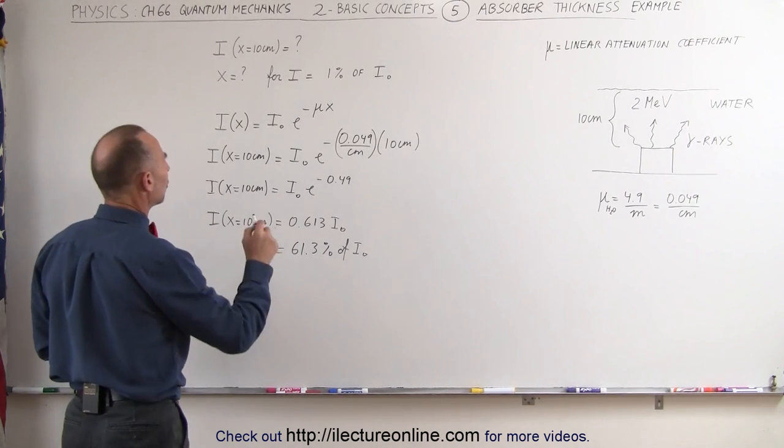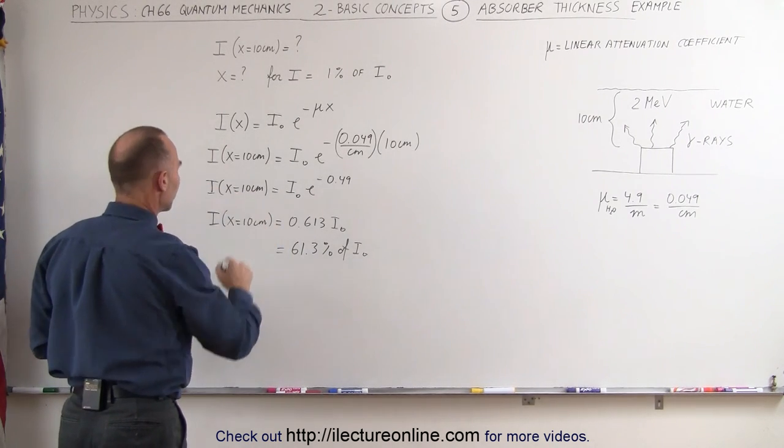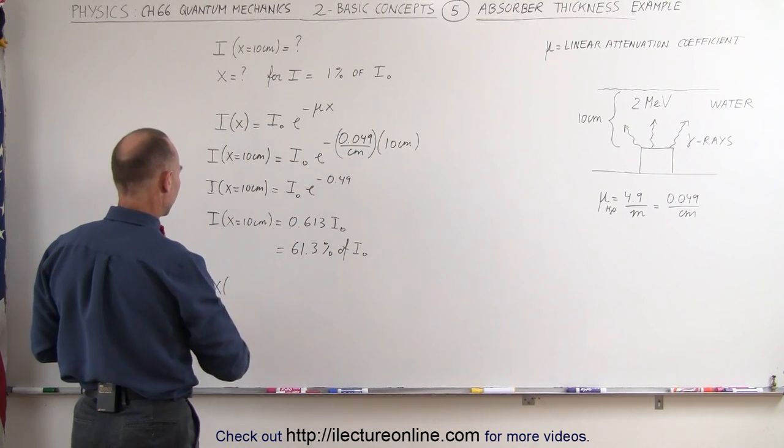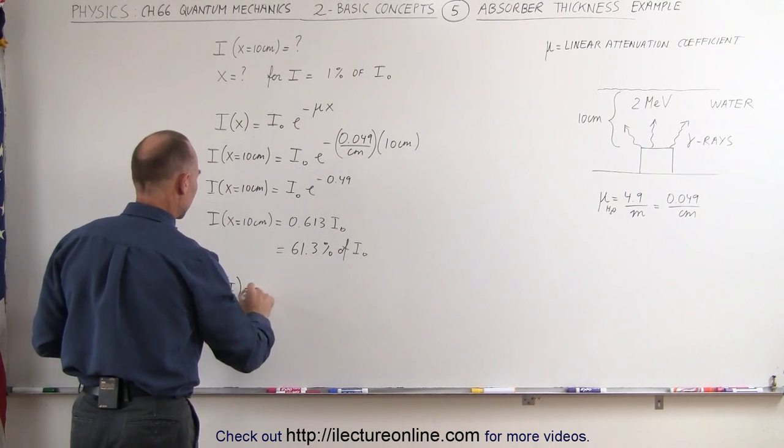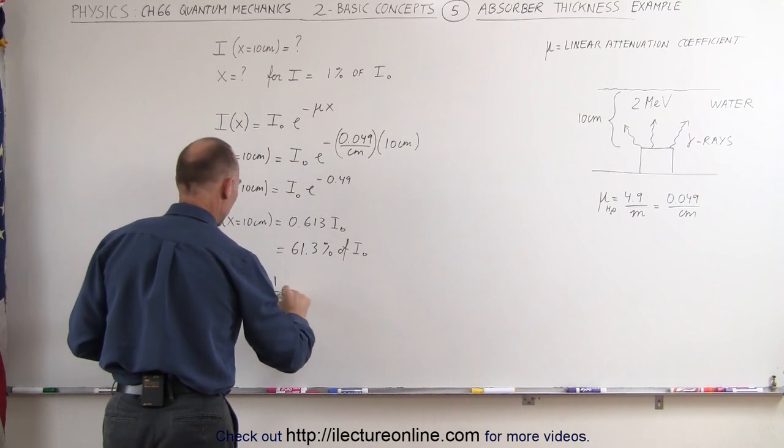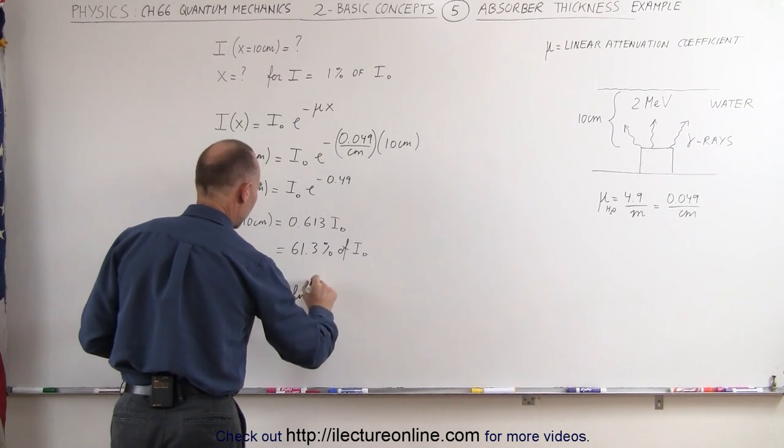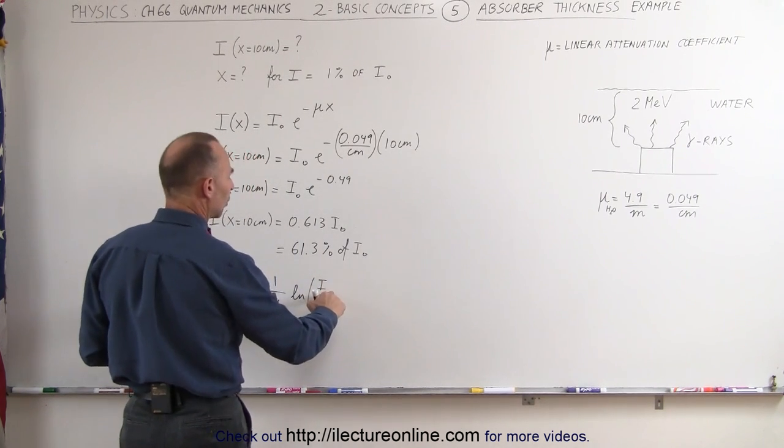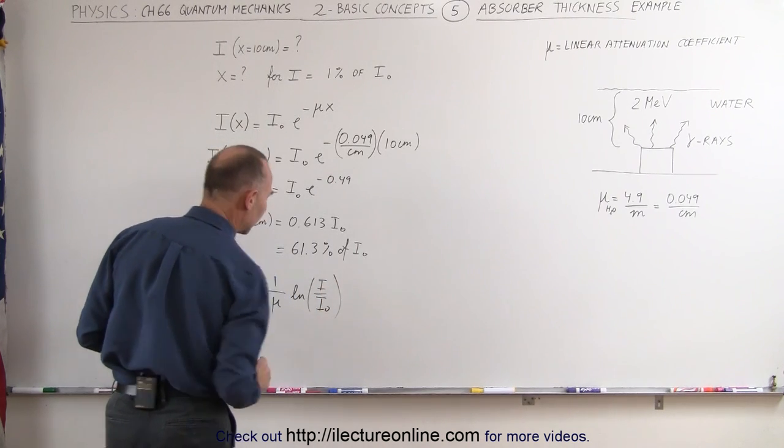In that case I need to rewrite the equation so when we solve the equation for x we get x as a function of intensity is equal to minus 1 over mu times the natural log of the ratio of the intensity that we're looking for divided by the original intensity.